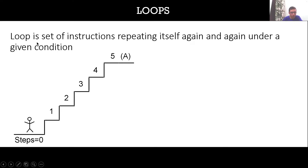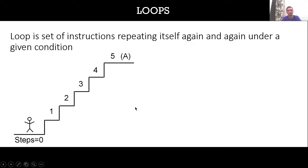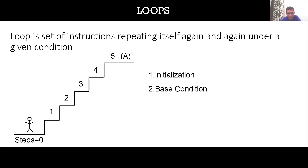In loops there is also a condition. We are repeating a step again and again but we have to stop when we reach A. So in this case the condition is: till we haven't reached A, we can take a single step. A loop basically consists of three parts: initialization, base condition, and updation.